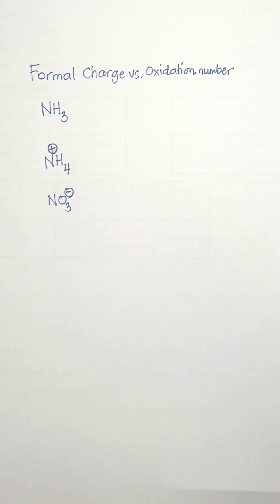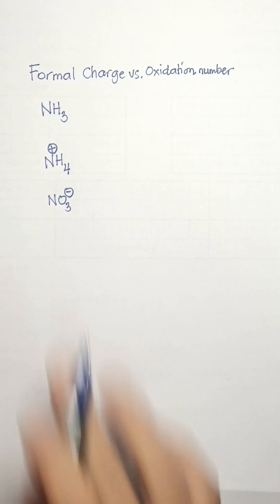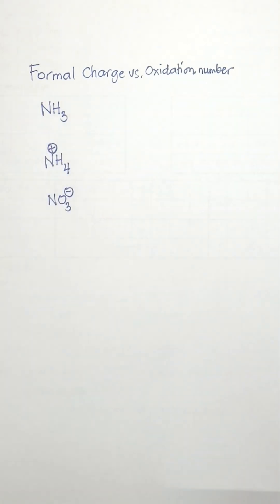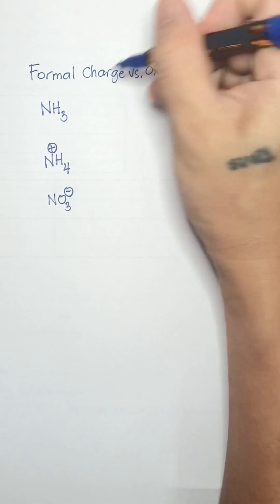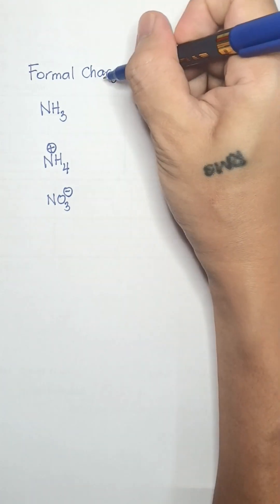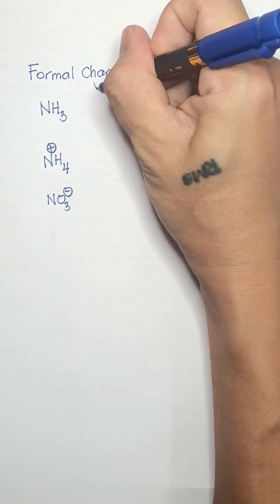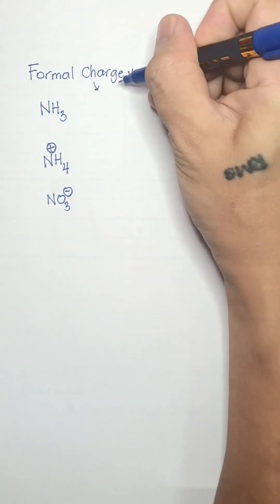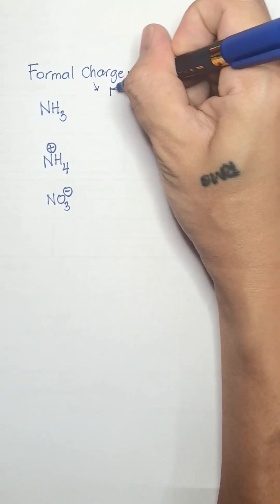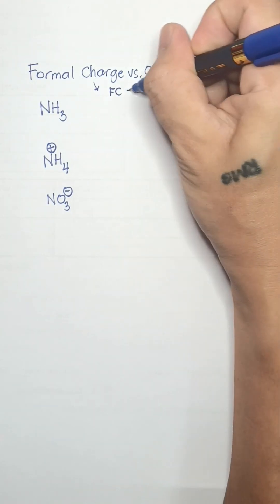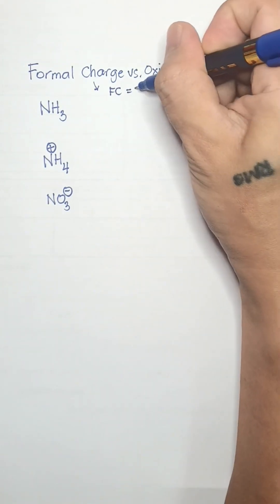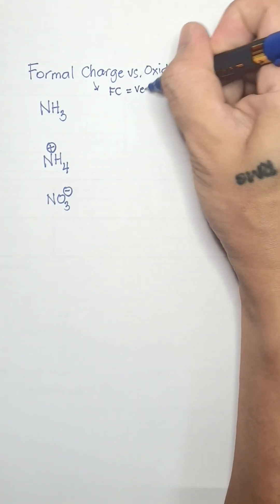In this video, we are going to learn about formal charge and oxidation number. Formal charge and oxidation number are two concepts used in chemistry to describe the distribution of electrons in a molecule or ion.